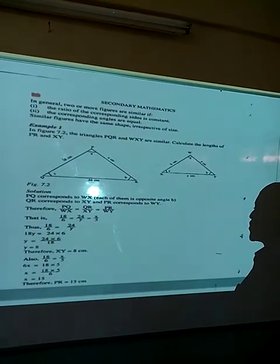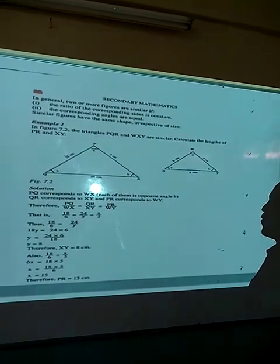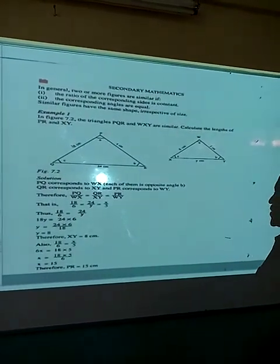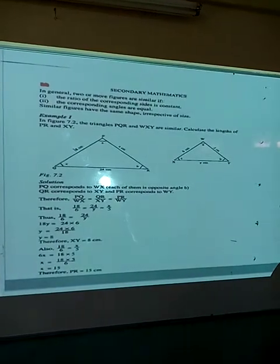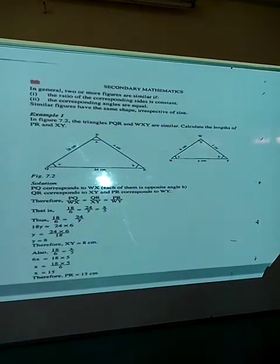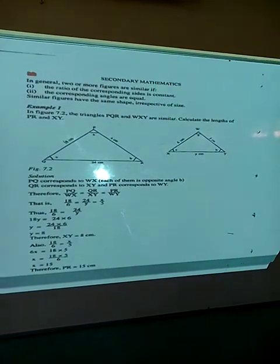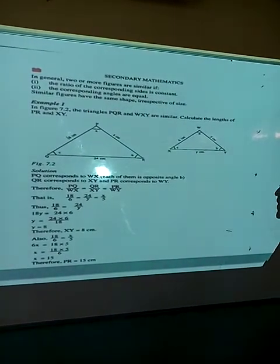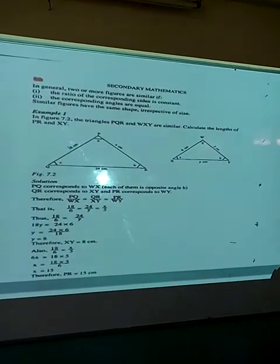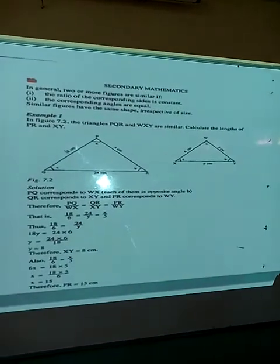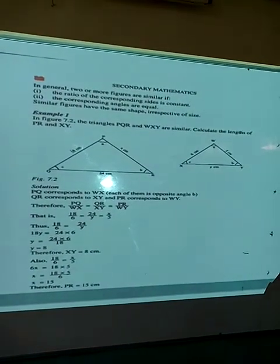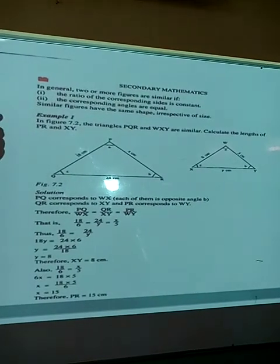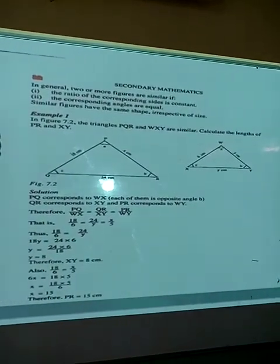18 over 6 equals 24 over Y. Therefore, 18Y equals 24 times 6, so Y equals 24 times 6 over 18. Therefore Y equals 8, meaning XY equals 8 centimeters. Also, when we want to get the value of X, we have 18 over 6 equals X over 5. So 6X equals 18 times 5, therefore X equals 18 times 5 over 6, giving X equals 15. Therefore, the side PR equals 15 centimeters.